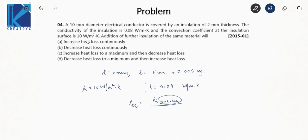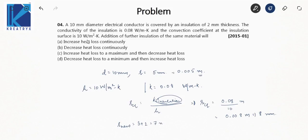The critical radius is r_critical = k_insulation/h = 0.08/10 = 0.008 m = 8 mm. The wire radius is 5 mm, and with 2 mm insulation added, the new outer radius becomes 5 + 2 = 7 mm. The critical radius is 8 mm.